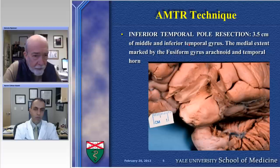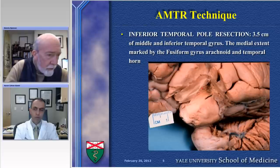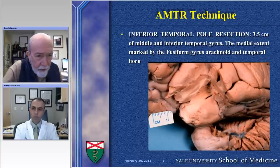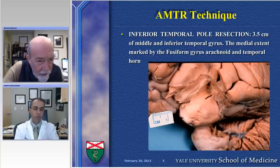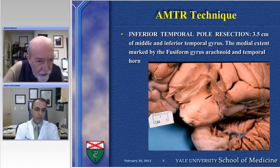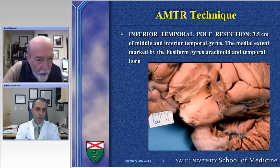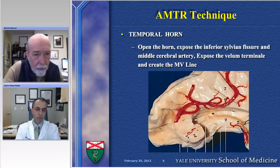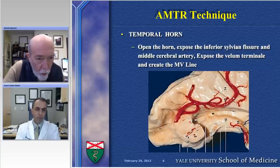This is a cadaver illustration of the pole resection. Here is the sparing of the superior temporal gyrus. The landmarks, as illustrated in this cadaver, show the resection to the temporal horn — one sees the temporal horn here. We've resected down at three centimeters posterior to the pole, down to the fusiform gyrus arachnoid, and followed that back as it leads us to the temporal horn. One opens the temporal horn and the...